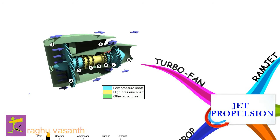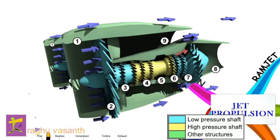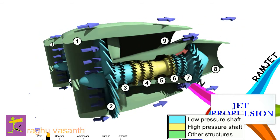The turbofan or fanjet is a type of air-breathing jet engine that is widely used in aircraft propulsion. The word turbofan is a portmanteau of turbine and fan. The turbo portion refers to a gas turbine engine which achieves mechanical energy from combustion, and the fan, a ducted fan that uses the mechanical energy from the gas turbine to accelerate air rearwards.